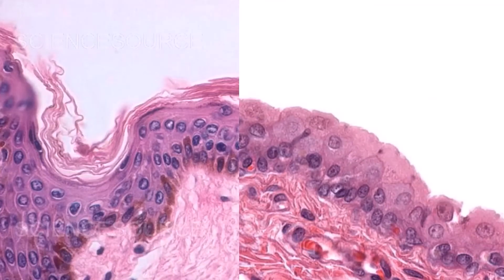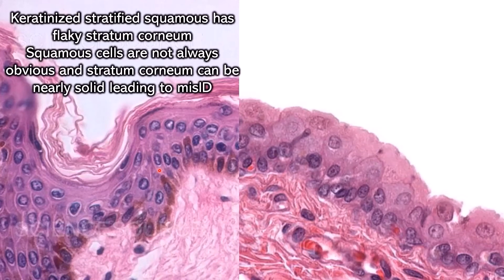You also might mistake this for being transitional, but this is actually stratified squamous. It is the keratinized variety, so it has a flaky top, which is how you know it can't be transitional. However, sometimes the flaky top can be really compressed, so it might not look that flaky, so you have to pay close attention.